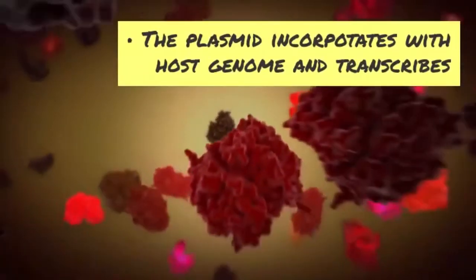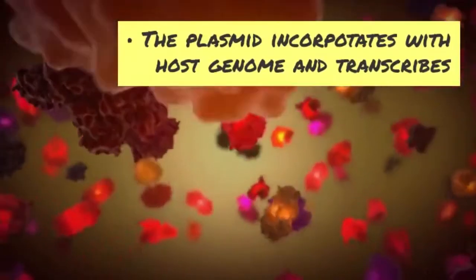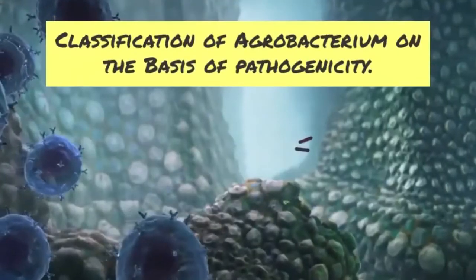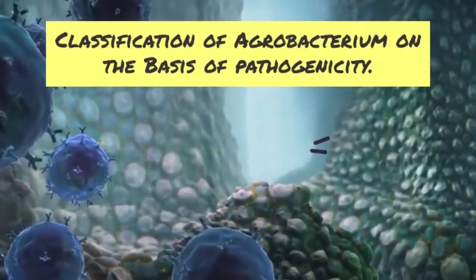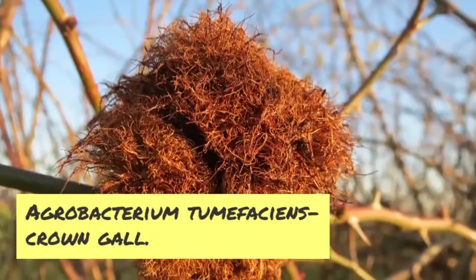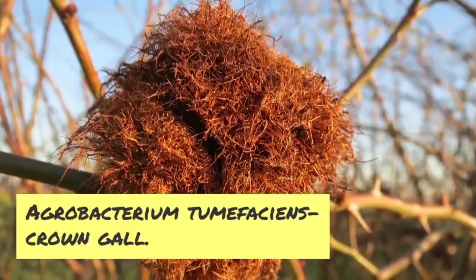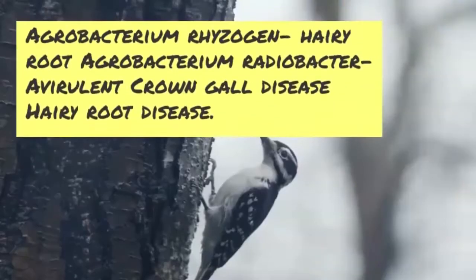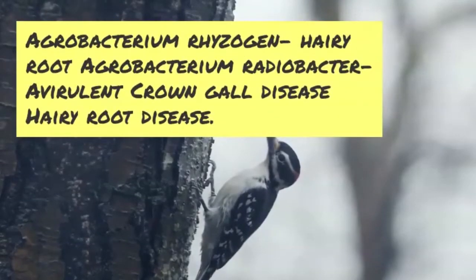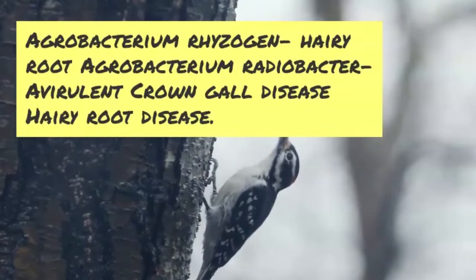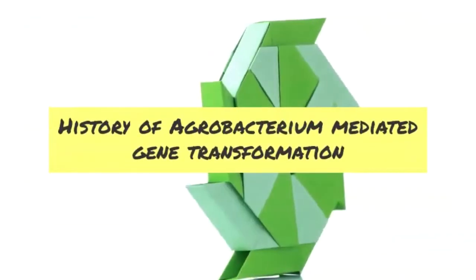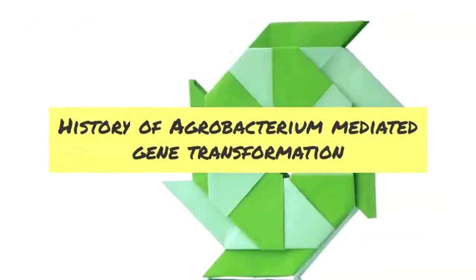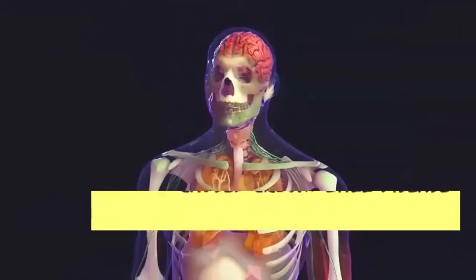Agrobacterium transfers the Ti plasmid into the host genome and transcribes it for their own purpose. Classification of agrobacterium on the basis of pathogenicity: Agrobacterium tumefaciens causes crown gall disease and Agrobacterium rhizogenes causes hairy root disease.